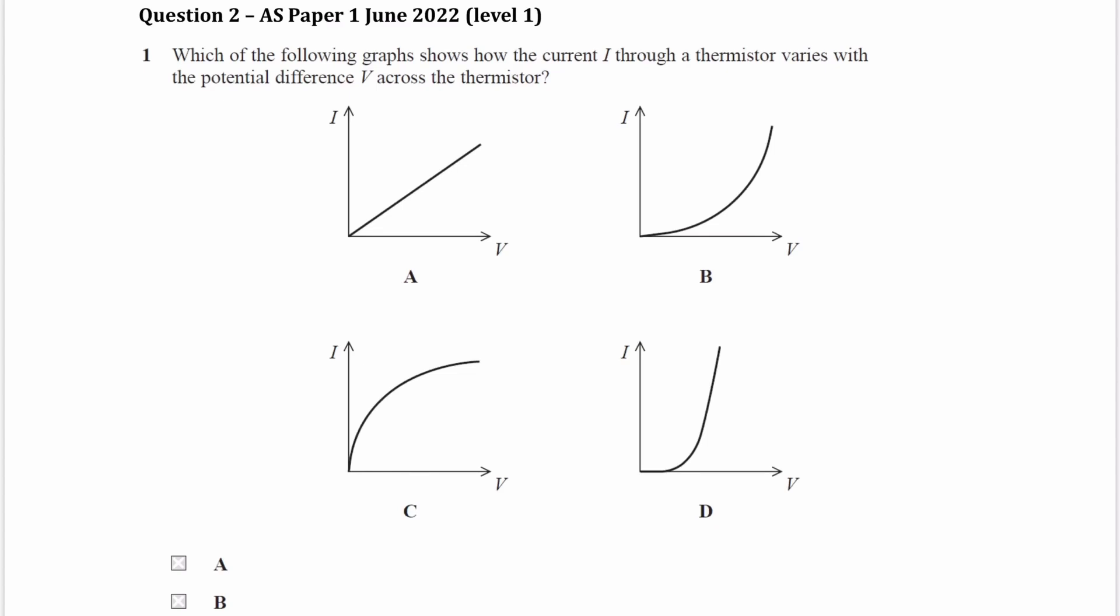For this question we want to see which of these graphs represents the IV characteristic for a thermistor. So the key thing about a thermistor, specifically an NTC thermistor, which is the default type of thermistor, that stands for negative temperature coefficient thermistor.